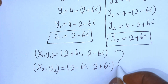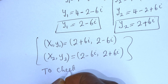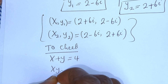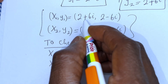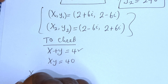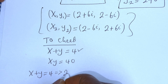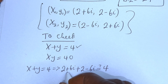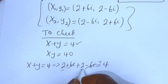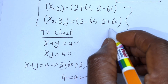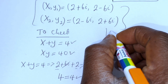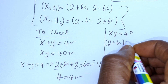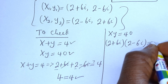We may check to confirm if this answer is right or wrong. To check, we use the given equations: x plus y equals 4, and xy equals 40. Let's consider x1, y1. For x plus y equals 4: (2 plus 6i) plus (2 minus 6i) must equal 4. The 6i terms cancel, and we have 2 plus 2, which is 4 equals 4 — which is true.